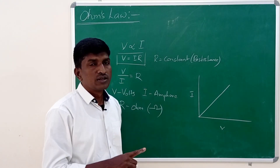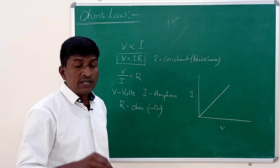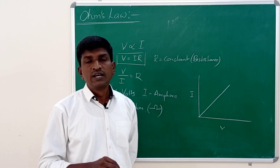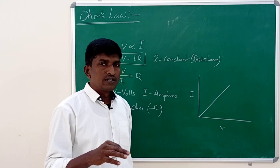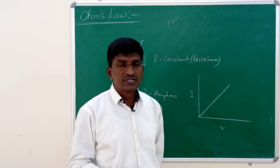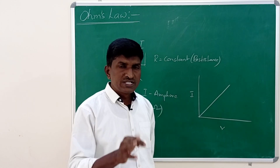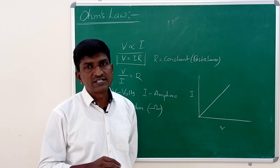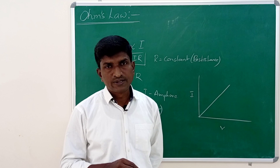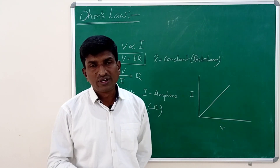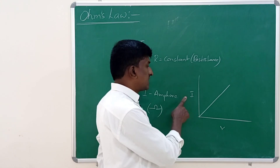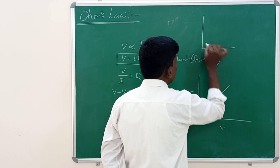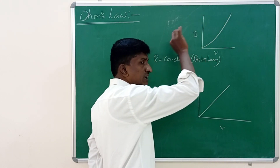All metals are ohmic conductors. Conductors which don't obey Ohm's Law are said to be non-ohmic conductors, like semiconductors, graphite, and all electrolytes. In these conductors, potential difference is not directly proportional to electric current. If you draw the graph between potential difference and electric current for non-ohmic conductors, that graph will be a curve.